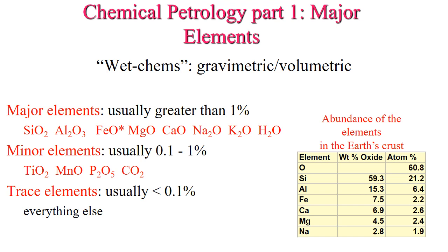Normally when we report iron — as we'll do through most of this lecture — we'll report it as FeO* or FeO(T) for total, which is a mathematical relationship between Fe³⁺ and Fe²⁺.